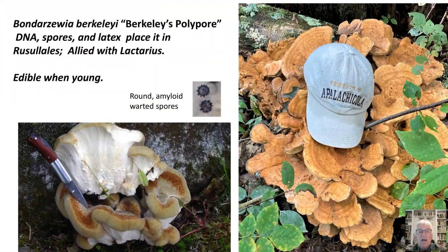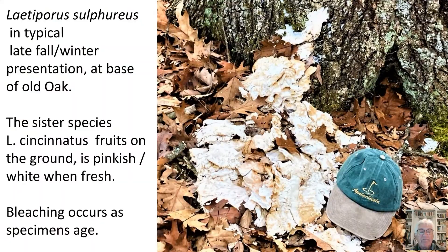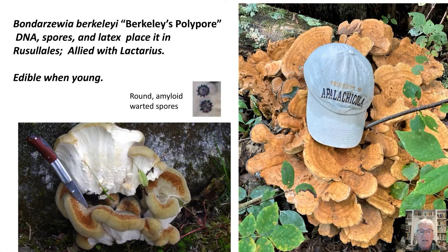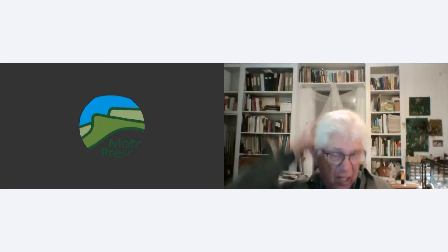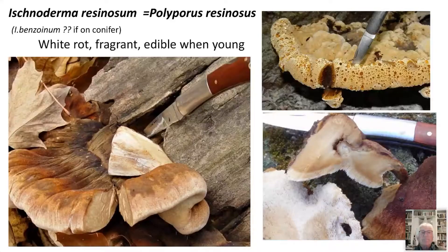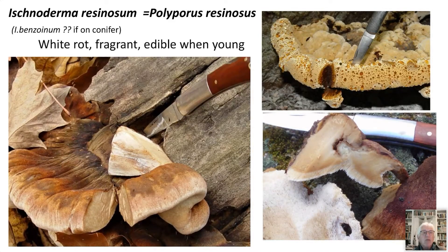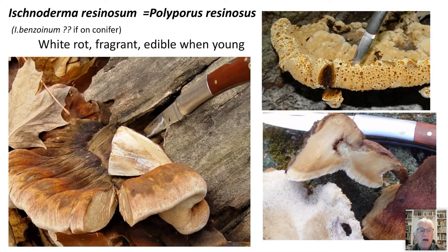Here we are with Bondarzewia berkeleyi — named after two mycologists, Bondartsev and Berkeley. Here's another mushroom which early in the year is edible. You wouldn't know it at this time of year but early in the year it is edible: Ischnoderma resinosum, or Polyporus resinosus. If it's on a conifer it's benzoinum. It causes white rot — very fragrant, very fragrant. It's edible when young. When you Google it you'll find these amber drops, the resin that comes out of it. Sliced into quarter-inch slices and cooked in butter with a little wine — that's good.